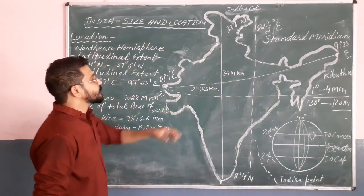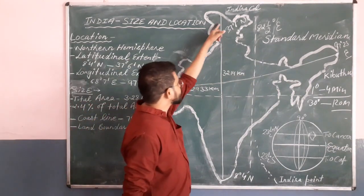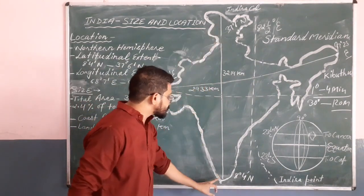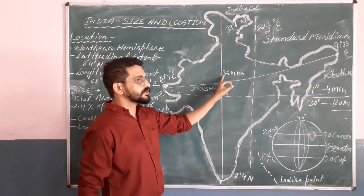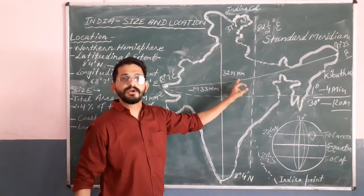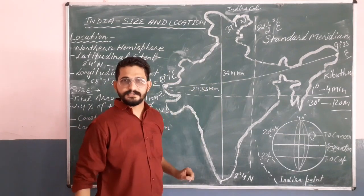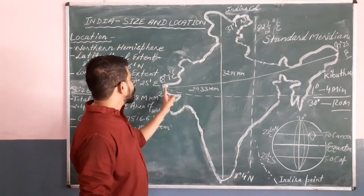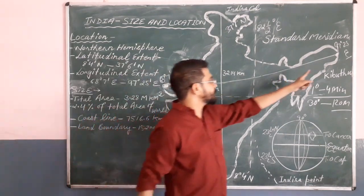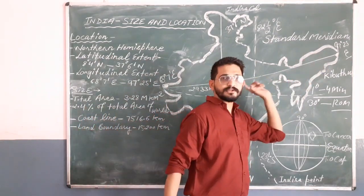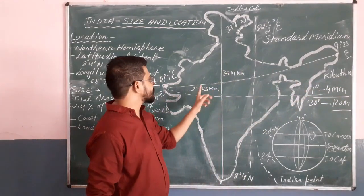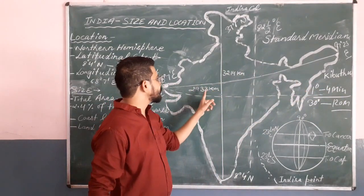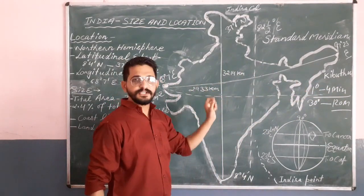Now we will see the north-to-south distance of India, which is 3,214 km. And the west-to-east distance from Gujarat to Arunachal Pradesh is 2,933 km.